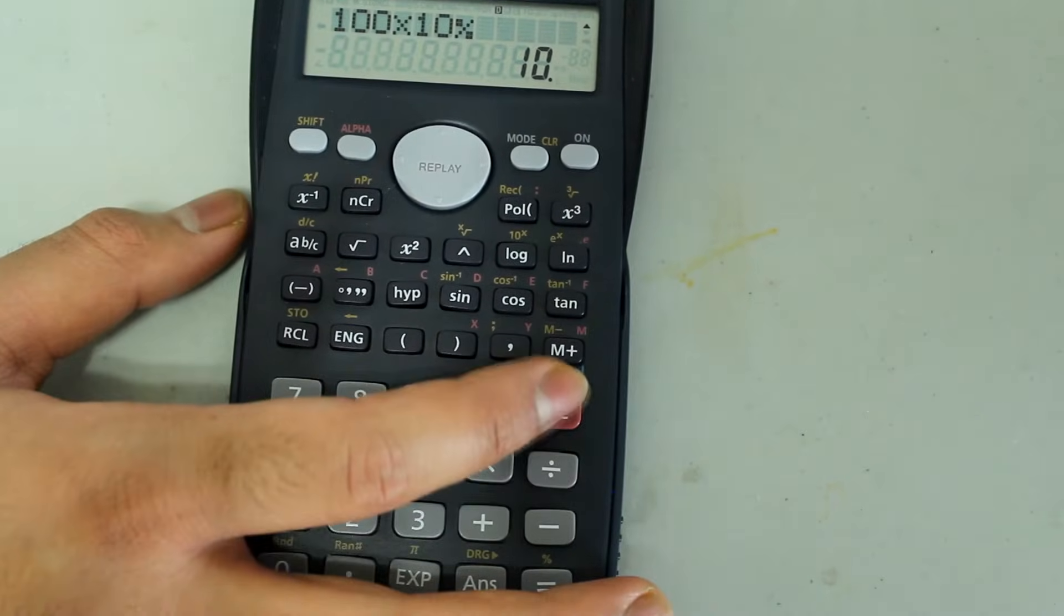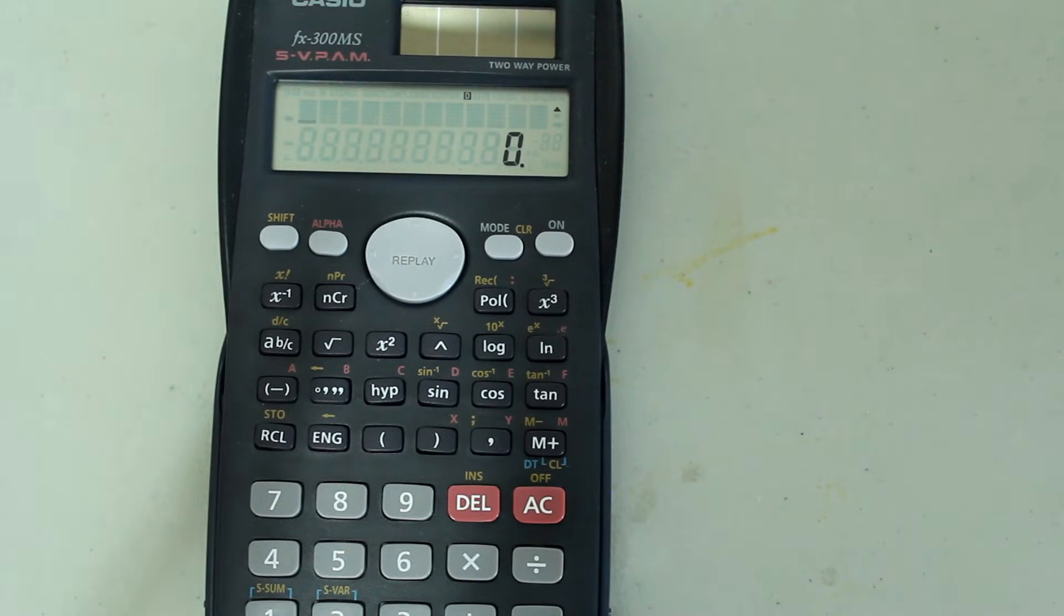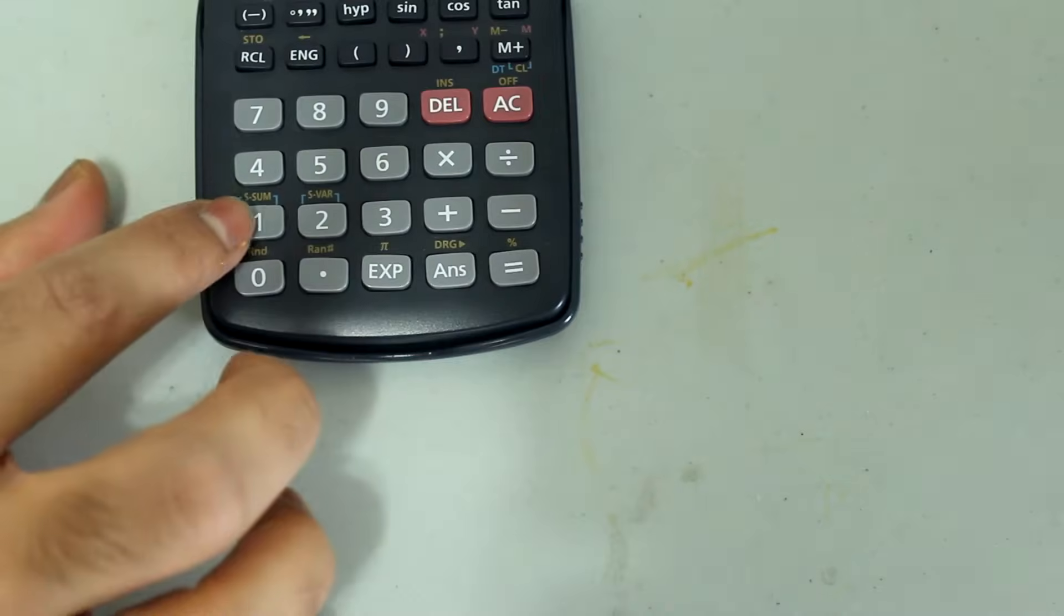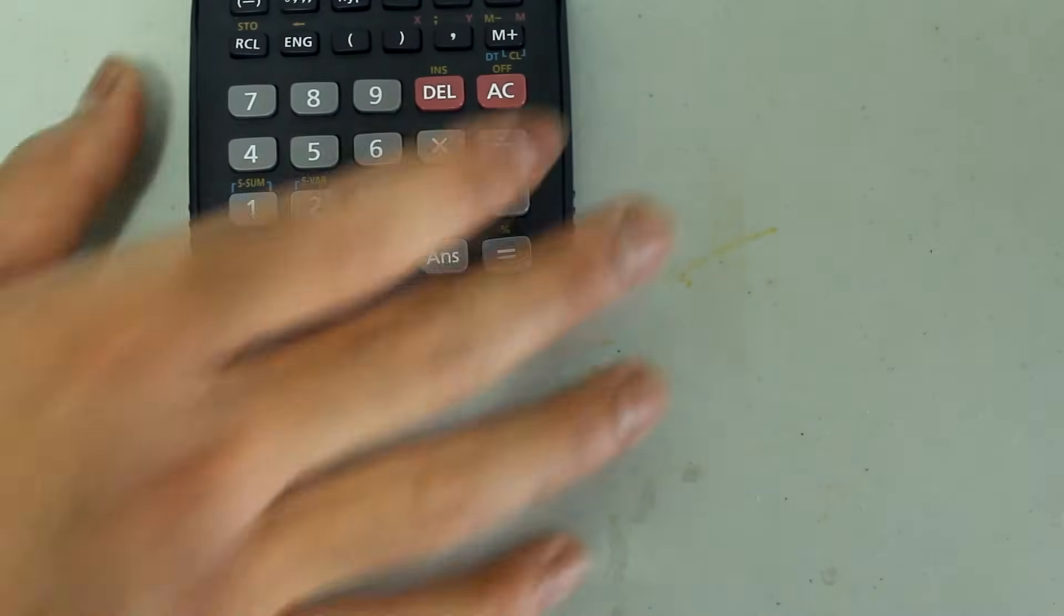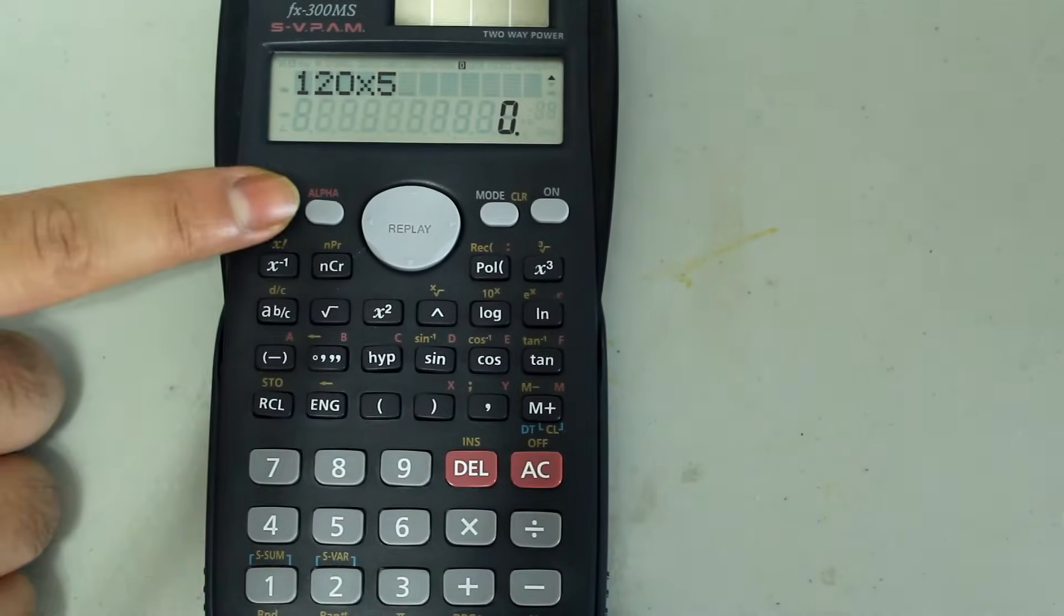So let's just do one quick one. Let's say you're looking for 5% of 120. So first, I'm going to type in 120 on the number pad, multiply that by 5, and then press Shift,